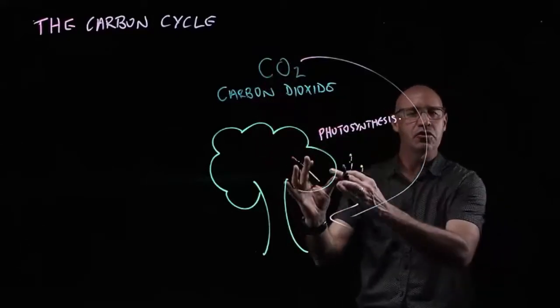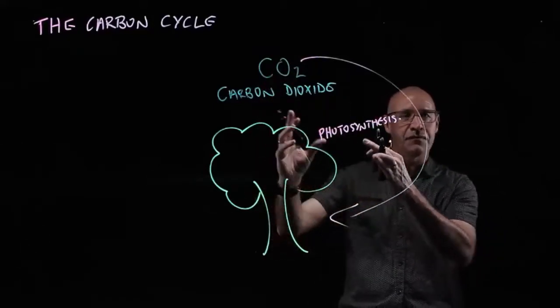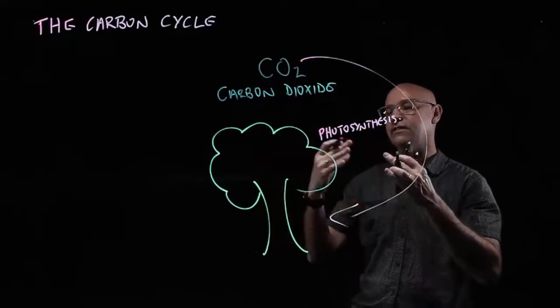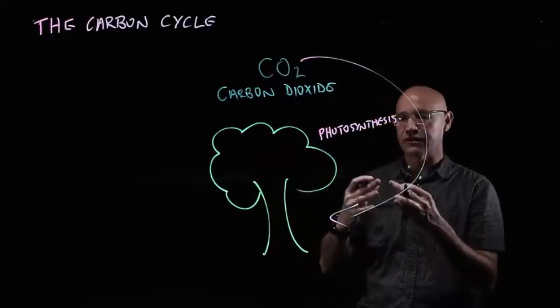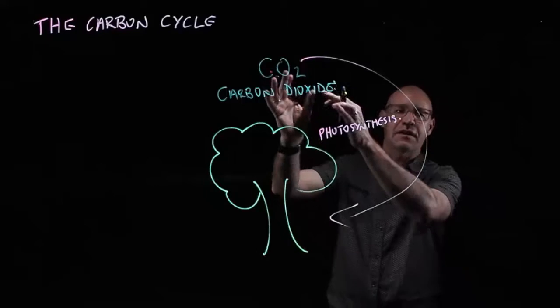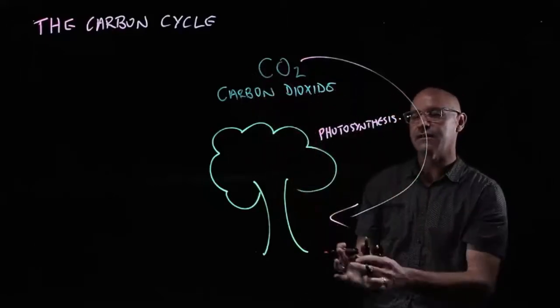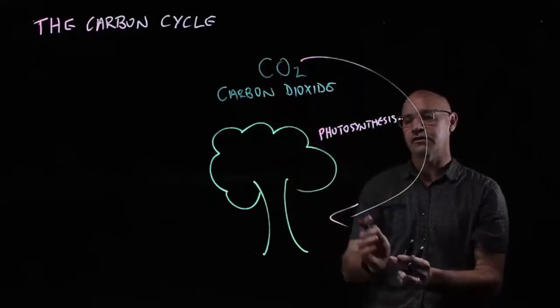The carbon gets stored in the plants, firstly as glucose and then as other carbohydrates like cellulose. And the carbon is fixed or taken out of the atmosphere through photosynthesis.